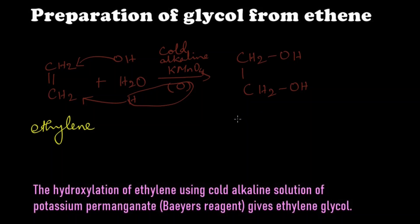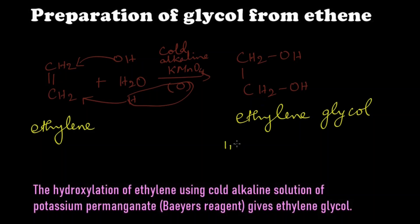From this ethylene we get ethylene glycol, or simply glycol. The IUPAC name of ethylene glycol is 1,2-ethanediol, or ethane-1,2-diol. To summarize: the hydroxylation of ethylene using a cold alkaline solution of potassium permanganate — Bayer's reagent — gives ethylene glycol as the product. Thank you.